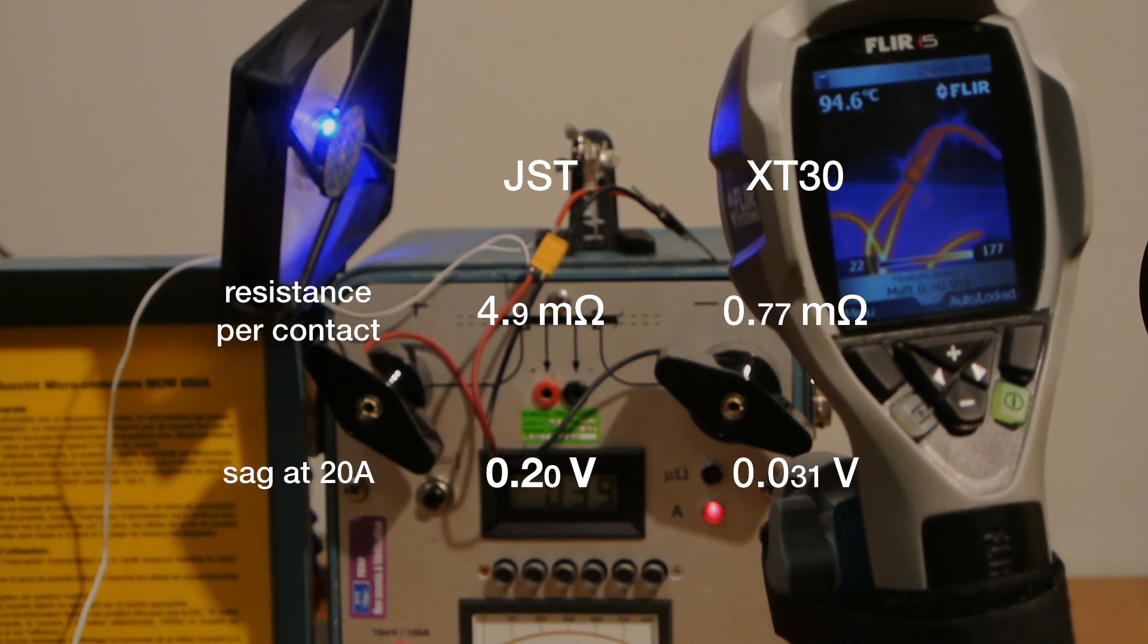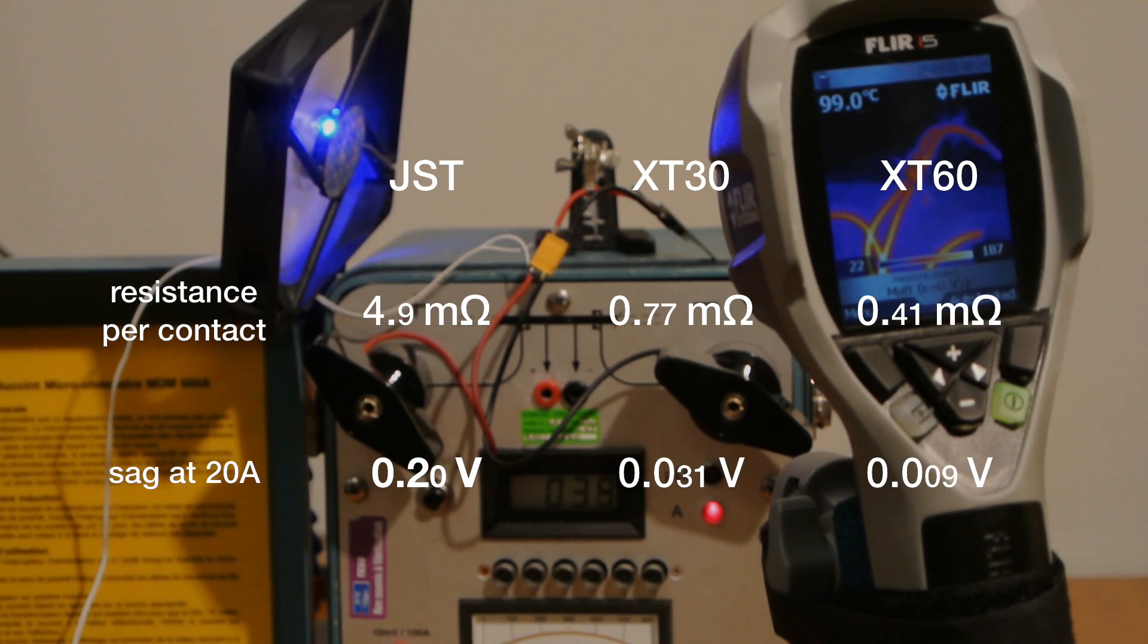The XT30, at the same current, will only cause 31 millivolts to drop, so much less. Of course, the bigger XT60 is even better than that, so at around 50 amps you might want to actually consider that.